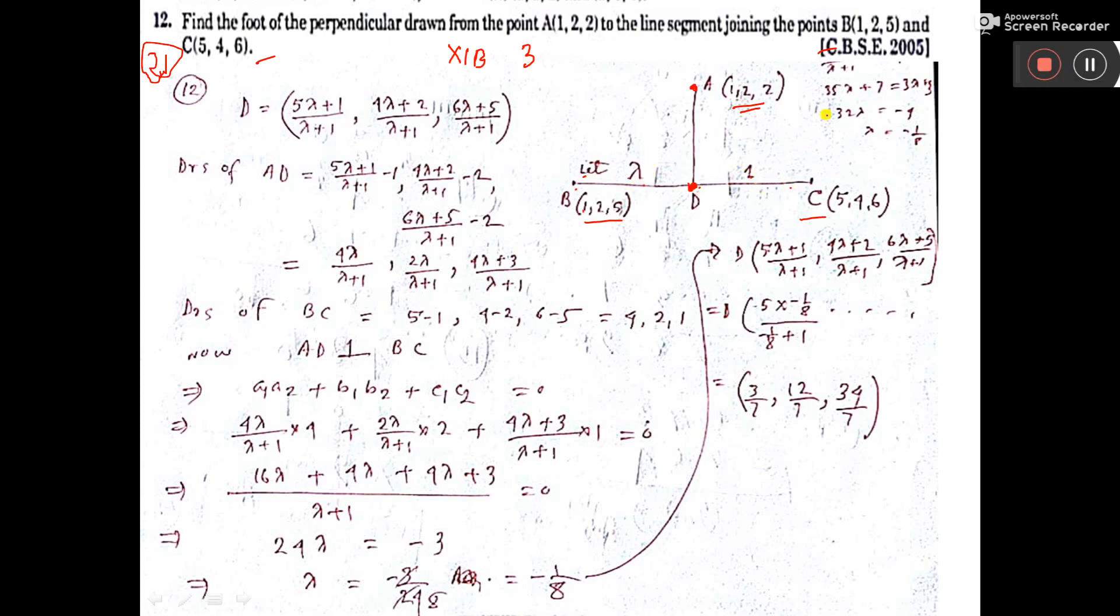Now this D point, see D point will be 5 into lambda plus 1 into 1 by lambda plus 1, comma 4 into lambda plus 2 into 1 by lambda plus 1. Then 6 into lambda plus this one. What is this? 5 into 1 that is by lambda plus 1.